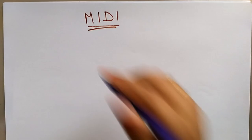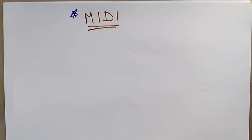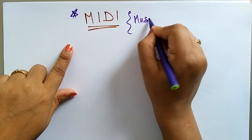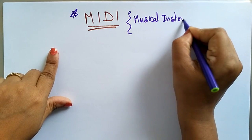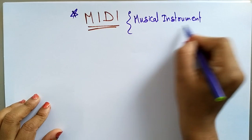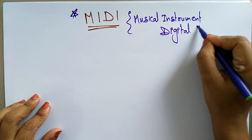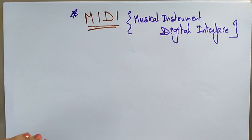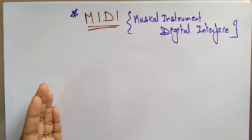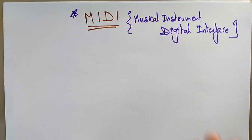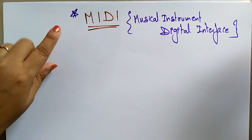Welcome back. The next topic in computer graphics is MIDI. MIDI stands for Musical Instrument Digital Interface. It is an interface device between components, between equipment, between devices — it acts as an interface.